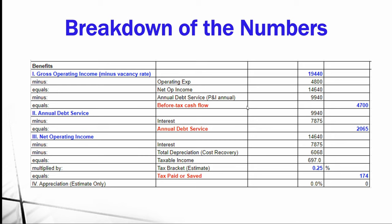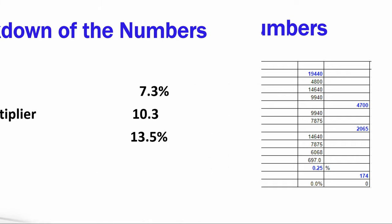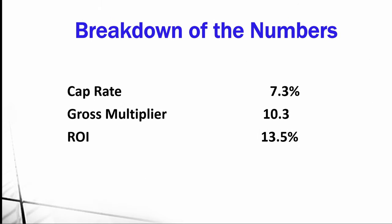To determine your tax amount: take net operating income minus interest, minus depreciation to get taxable income, then multiply by your tax bracket. In this example the tax amount is $174. I've listed appreciation here but don't calculate it — appreciation is subjective and there are no market guarantees.